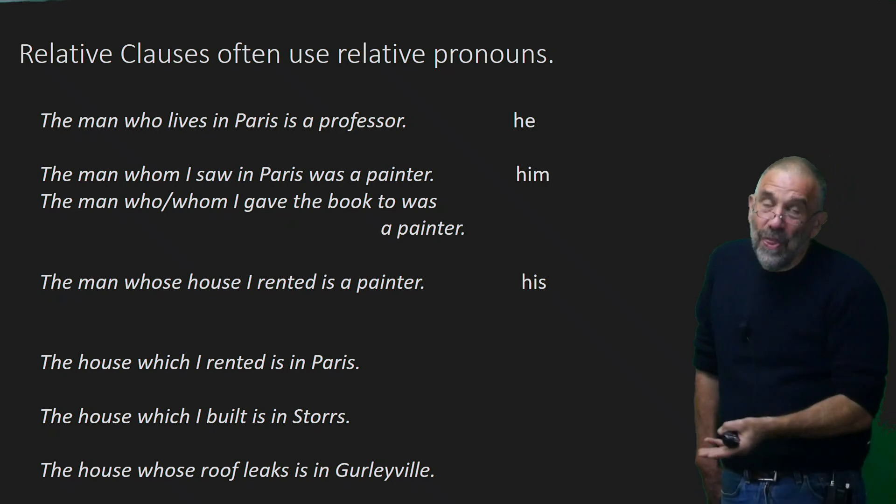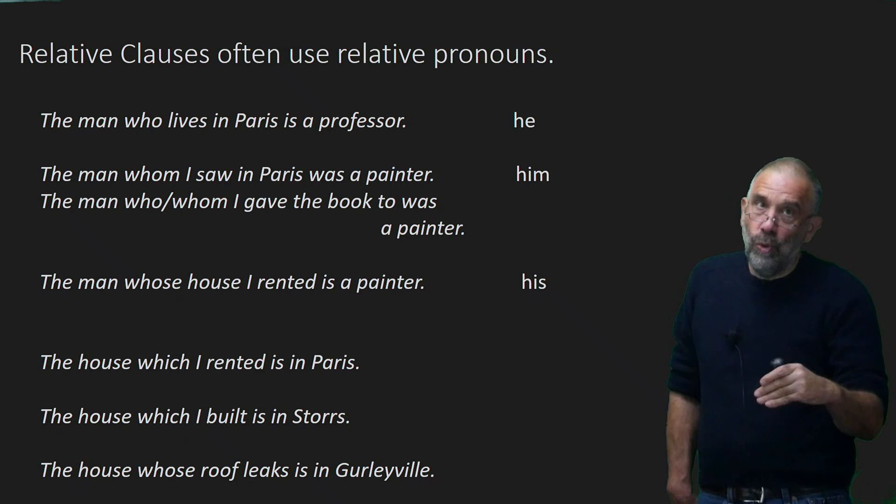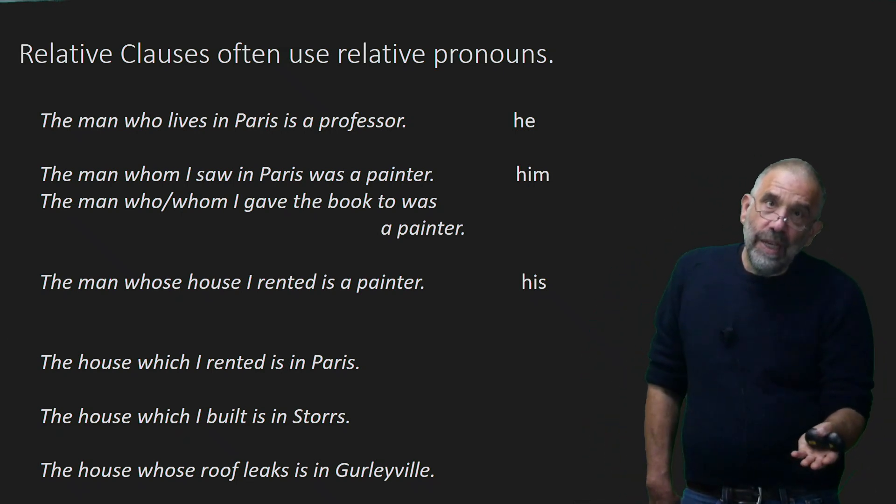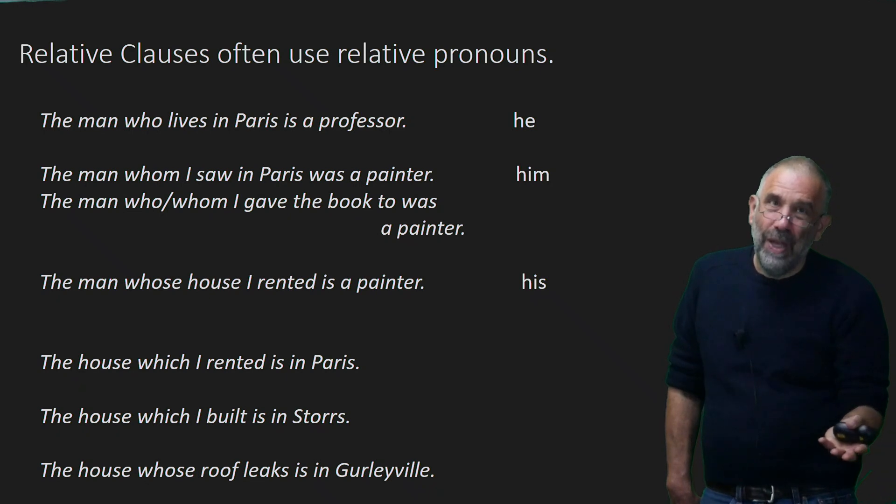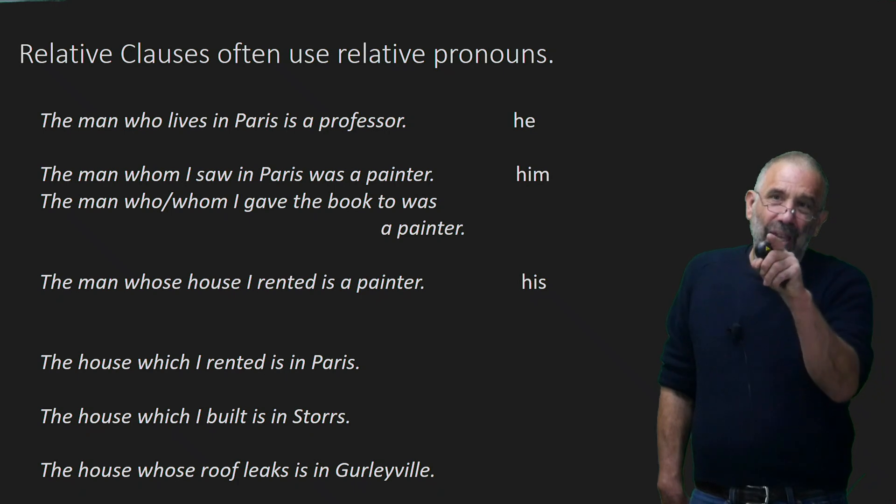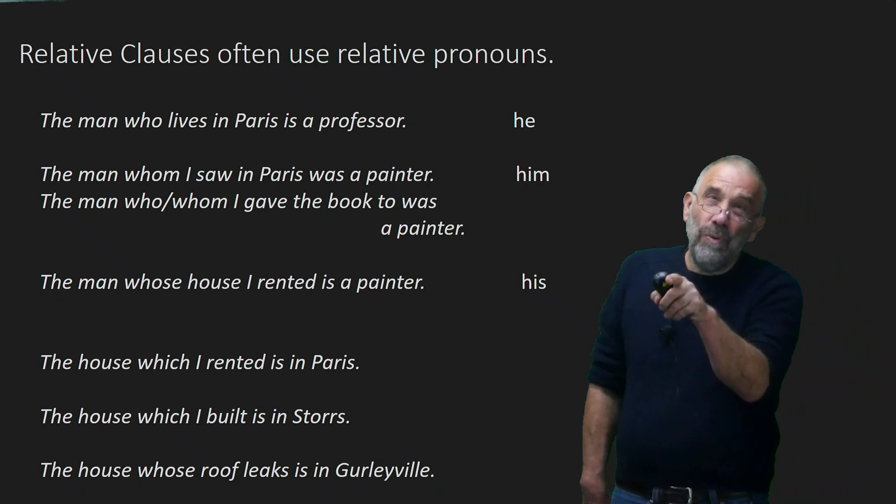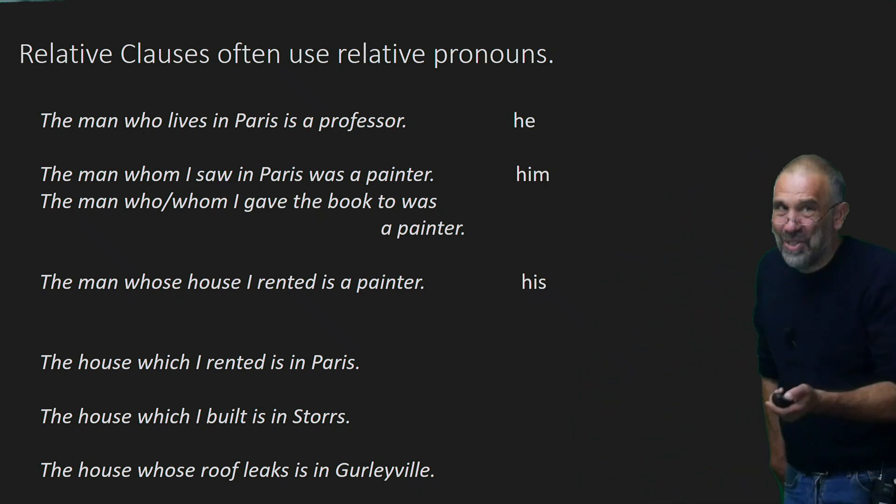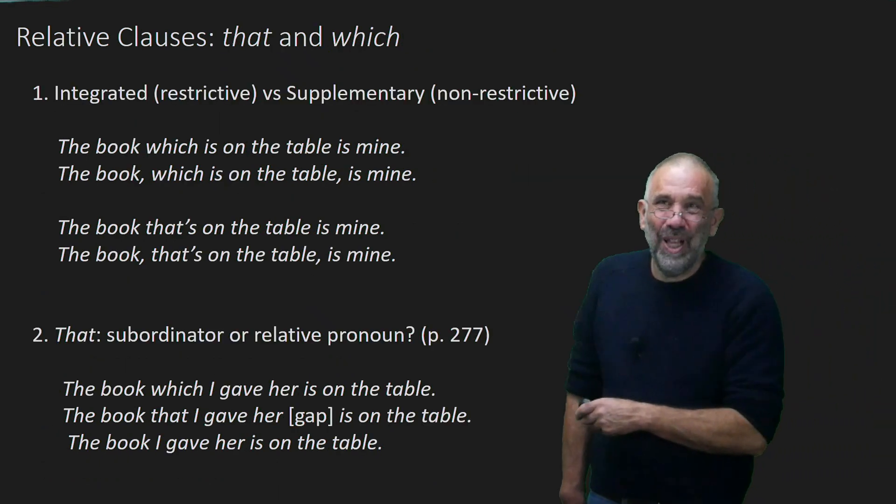And we tend to think of using who, whom, whose with people. But because it's the only genitive form, if it's going to function as a determiner, its roof leaks, then we're going to use the whose form in that construction. Ask in class if you don't see it, but I think you probably do.